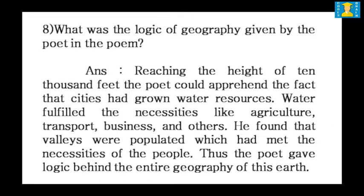Question three: What was the logic of geography given by the poet in the poem? Answer: Reaching the height of 10,000 feet, the poet could apprehend the fact that cities had grown near water resources. Water fulfilled the necessities like agriculture, transport, business and others. He found that valleys were populated which had met the necessities of the people.